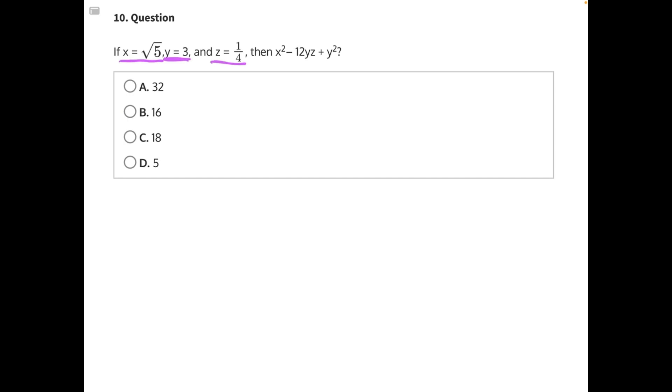So let's start rewriting our expression. Instead of x squared, we will have the square root of 5 squared minus 12 times y. Instead of y, we will put 3. Instead of z, we will substitute 1/4 plus, here we have y again, which is equal to 3 squared.